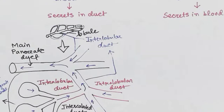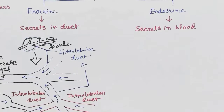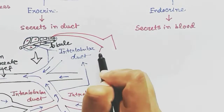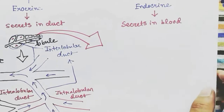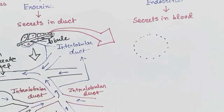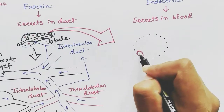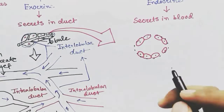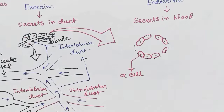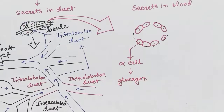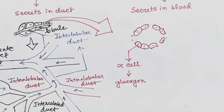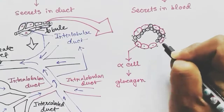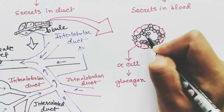Now coming to the endocrine part of the pancreas: these are lightly stained islets in the lobules, surrounded by acinar cells. Each islet has special cells at the periphery called alpha cells, which constitute 20 to 30 percent of the islet and release glucagon. Another type, the beta cells, constitute 70 percent of the islet, are mainly present in the middle portion, and release insulin.